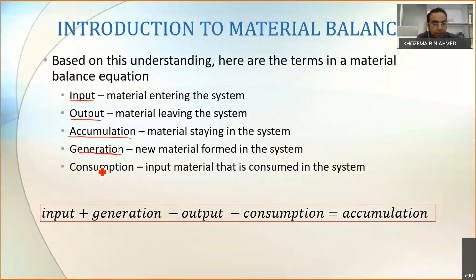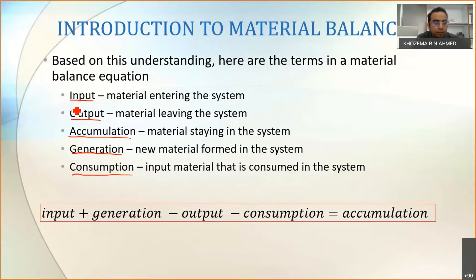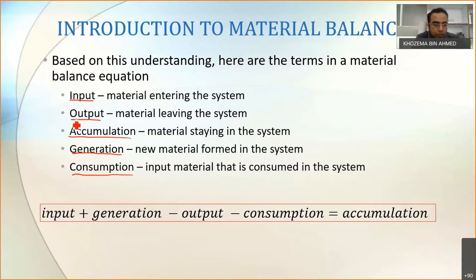And if you have input material that is consumed in the system you call it consumption. So you have to understand what is meant by input, output, accumulation, generation, and consumption. Based on these five terms, we can develop a general mass balance or material balance equation.